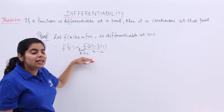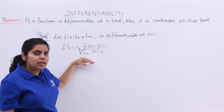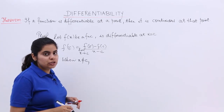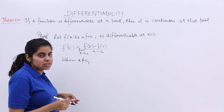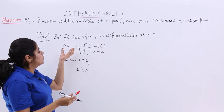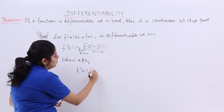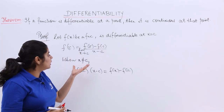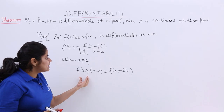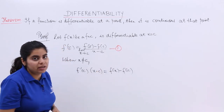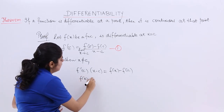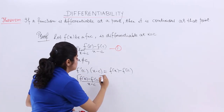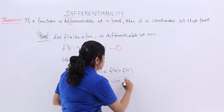This is the case when the limit is tending towards c, but that does not mean that x will always equal c. So I take the case when x is not equal to c. Then I can multiply both sides by (x minus c), so it becomes: f'(c) multiplied by (x minus c) equals f(x) minus f(c). We are not talking about the limit; we are just saying that x is not equal to c.